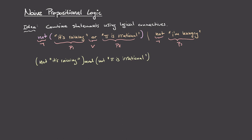So here I'm going to bracket it in this way: we're first applying the negation to the statement 'it's raining' and we're separately applying negation to the statement 'pi is irrational', and then we're combining them using 'and'. In our logical notation, this thing would be 'not p1 and not p2'. Now, if you think about it a bit, these two statements are actually saying the same thing. And in the case of propositional logic, we'll be saying that these two formulas are actually going to be logically equivalent.